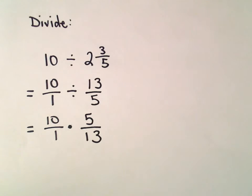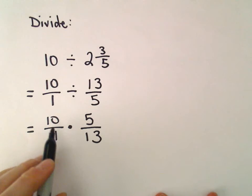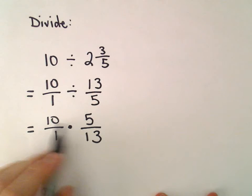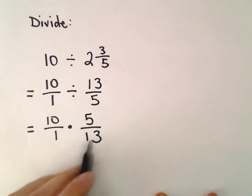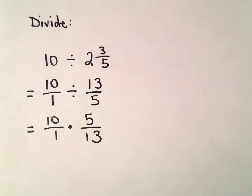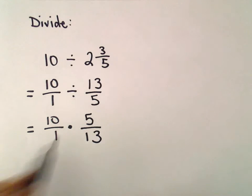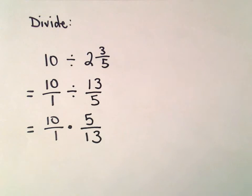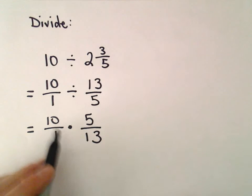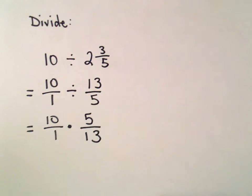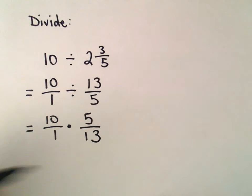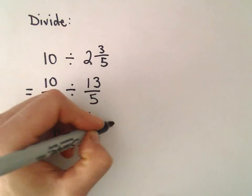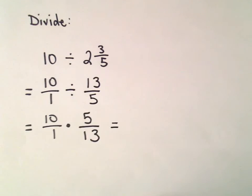At this point, are there any common factors? Looking at 10 and 5 in the numerator, there's only a 1 and a 13 in the denominator. We can't reduce any of these fractions, so I'm just going to go ahead and multiply.